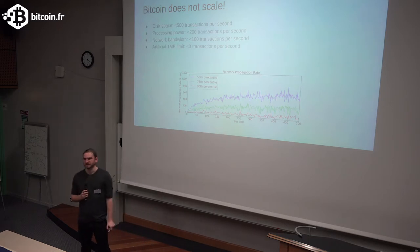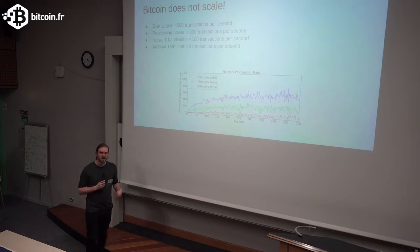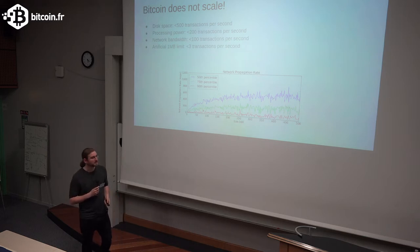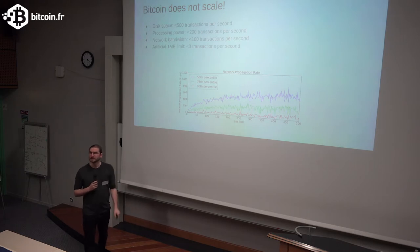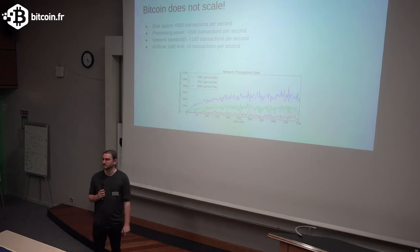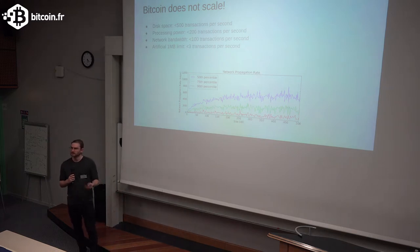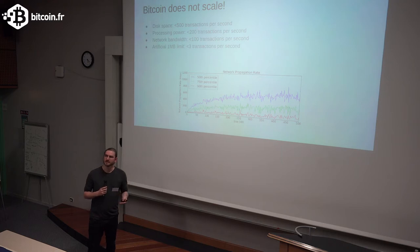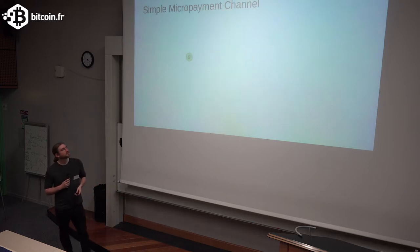Transactions on the Bitcoin blockchain do not scale, but we'd still like to buy our coffee. Is there a way to sidestep this — to not do all transactions on the Bitcoin blockchain but still have its security? It turns out that around 2011, a guy named Jeremy Spilman came up with the idea of a micropayment channel: a smart contract between two endpoints that allows rapid incrementing transactions without going to the blockchain every time.